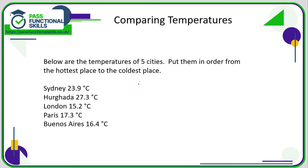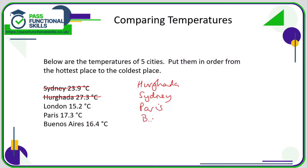Hurghada is the hottest, so let's put a line through it. Sydney at 23 is bigger than 15, 17, and 16, so second place is Sydney. Now we've got 15, 17, and 16 remaining — 17 is the biggest. So the order from hottest to coldest is: Paris, followed by Buenos Aires, and finally London.